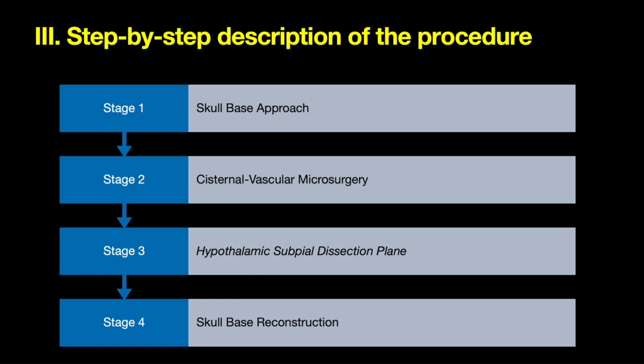Step-by-step description of the procedure. There are four different stages: one, skull base approach; two, cisternal vascular surgery; stage three, hypothalamic sub-pial dissection plane; and stage four, multilayer skull base reconstruction.